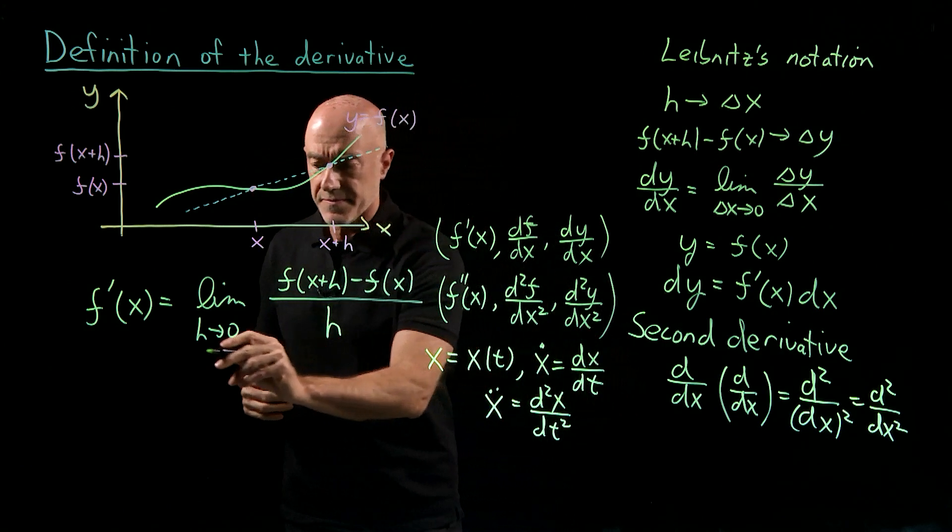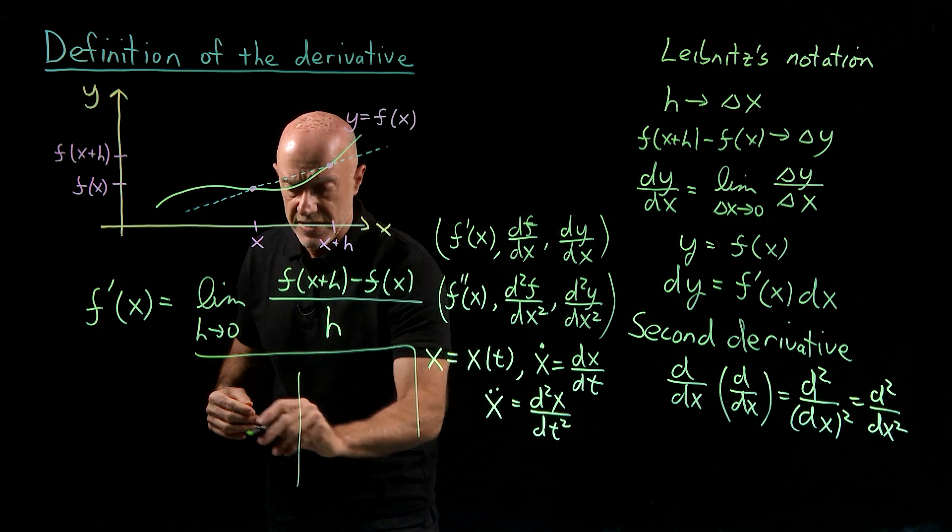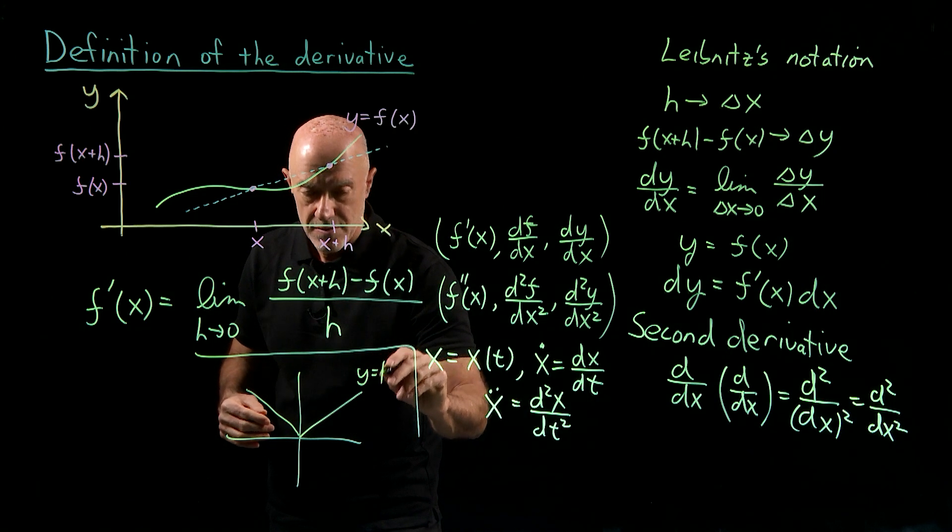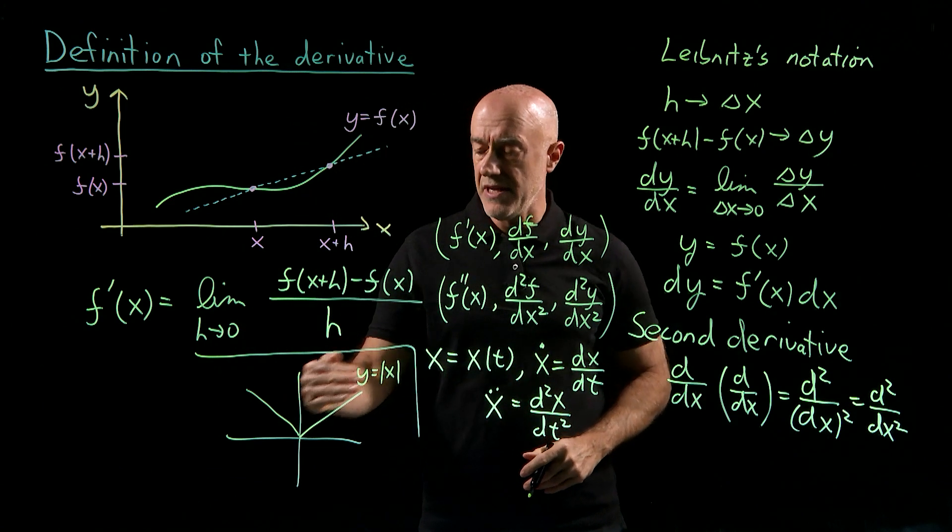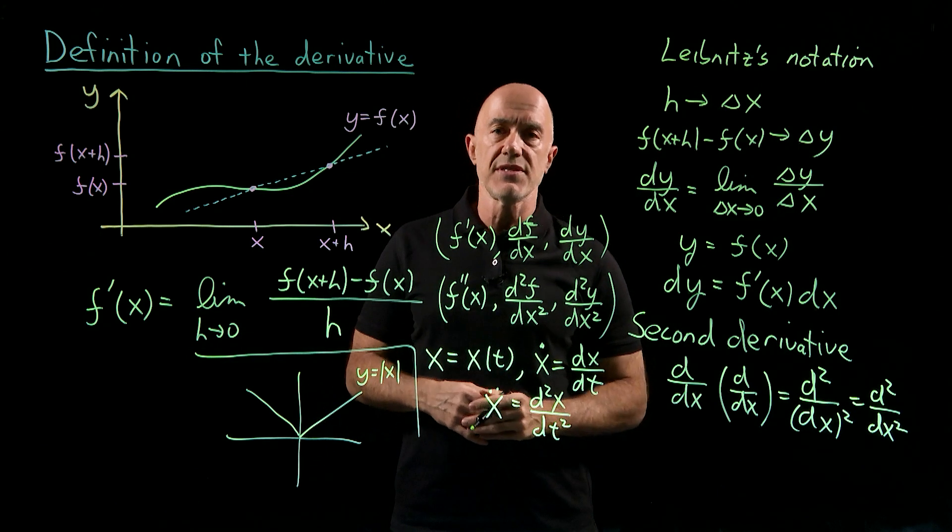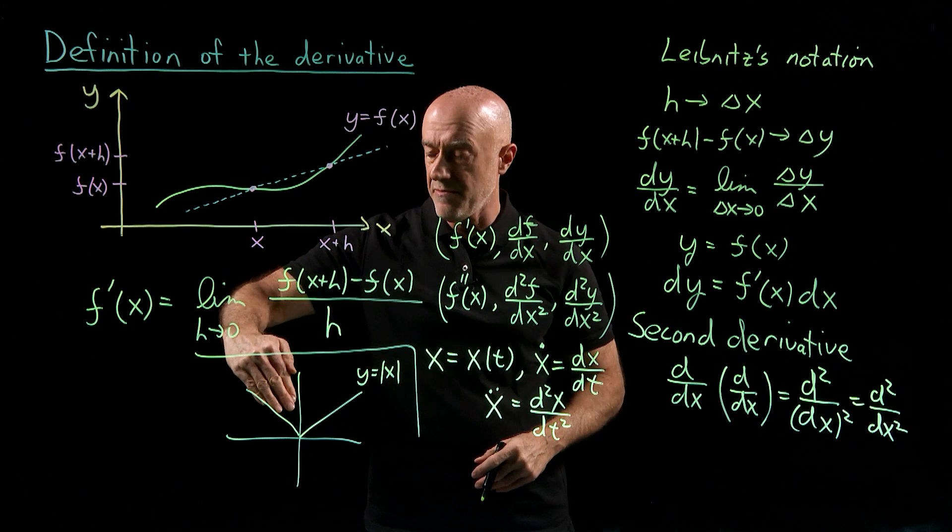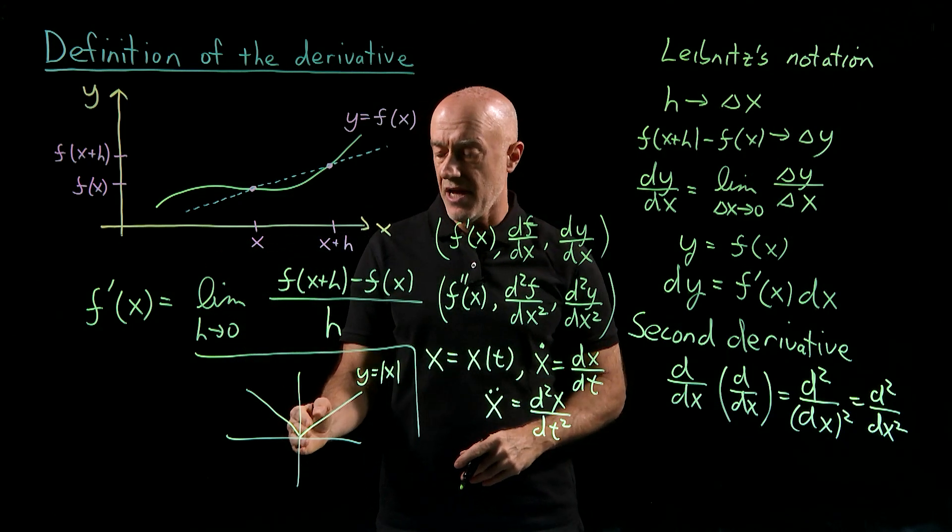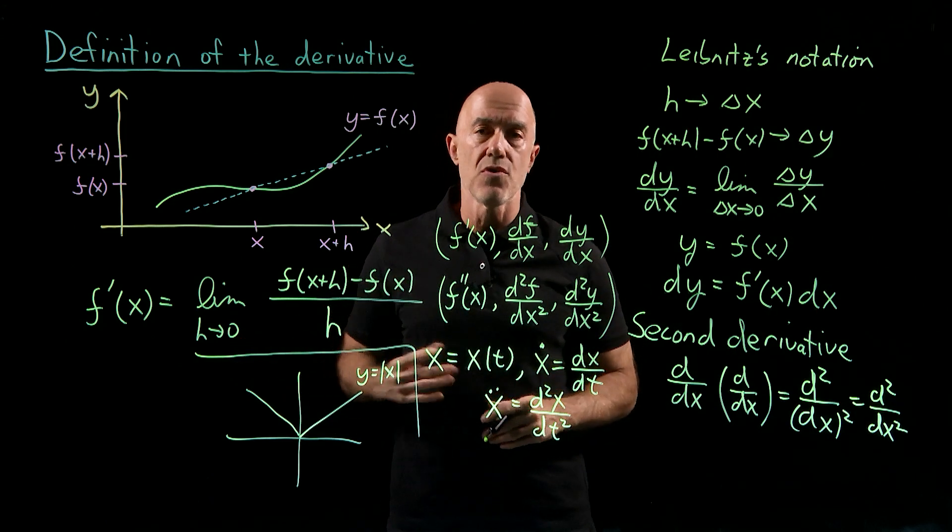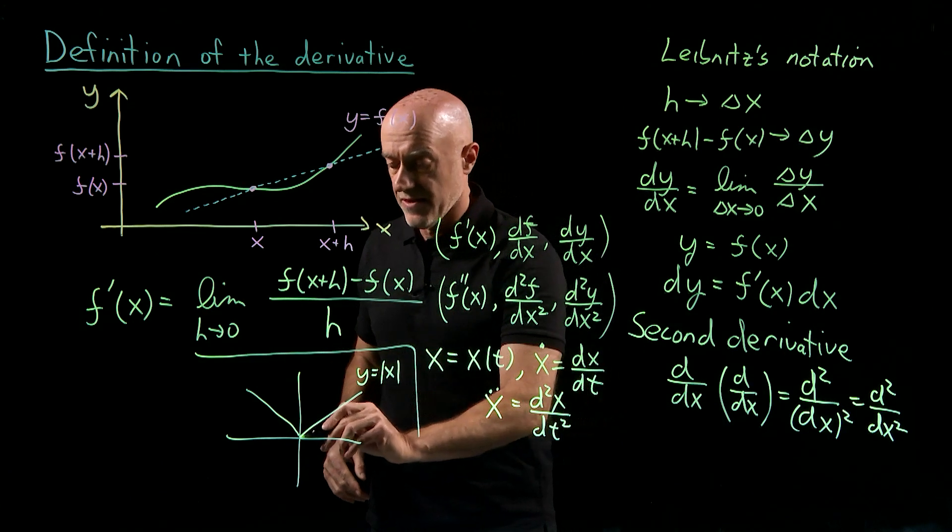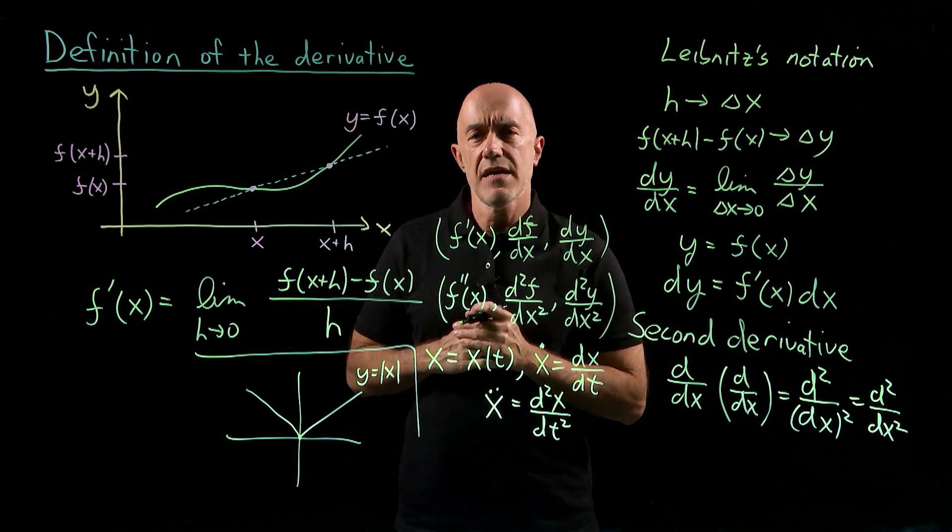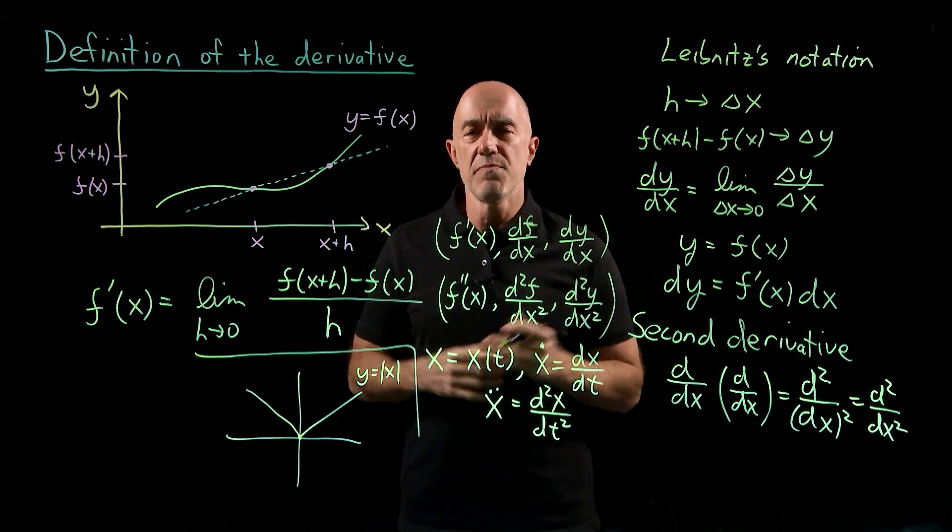So as an example, if we have the function y equals absolute value of x, then there's a definite tangent line on the right, there's a definite tangent line on the left, but the point at x equals zero is ambiguous because the tangent line coming from the left slopes down, and the tangent line coming from the right slopes up. So we say that this function with a sharp corner is not differentiable exactly at the corner. Other than that, most of the functions that we'll be dealing with in this course Calculus for Engineers will be differentiable functions.